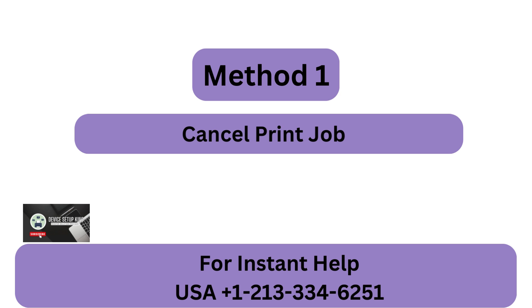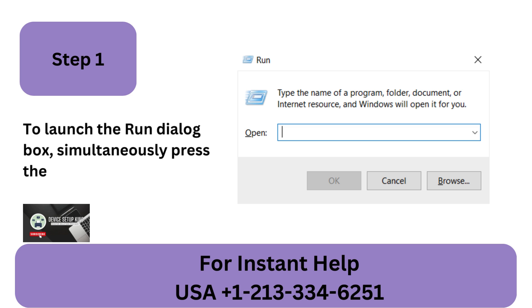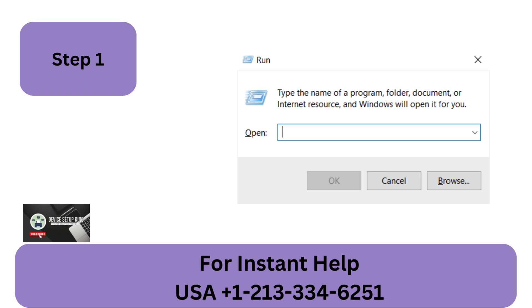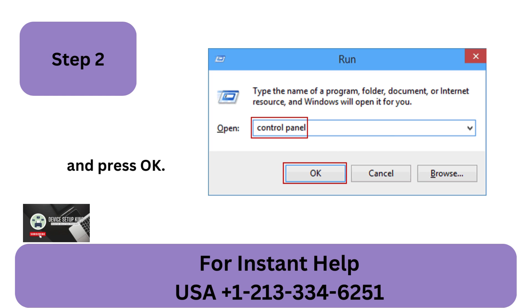Cancel Print Job. Step 1: To launch the Run Dialog Box, simultaneously press the Windows and R keys. Step 2: In the space that opens, type Control Panel and press OK.